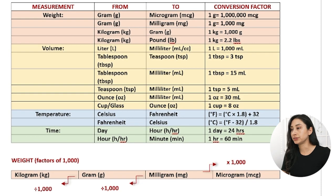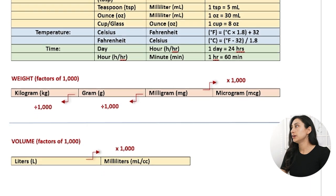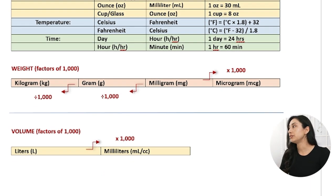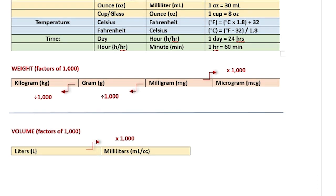Here I have an example of a straightforward conversion with weight. In the weight category shown in orange, conversions between gram-based units are pretty straightforward because they occur in factors of a thousand. If I want to convert grams to kilograms, all I would have to do is divide by 1,000. And vice versa — if I want to go from kilograms back to grams, I would multiply by 1,000. If I want to convert grams to milligrams, looking at this chart, I would multiply by 1,000. And vice versa, going from milligrams back to grams, I would divide by 1,000.